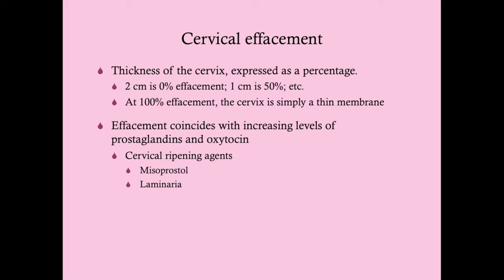Effacement coincides with increasing levels of prostaglandins and oxytocin. We can give prostaglandins to move effacement along — these are called cervical ripening agents. Examples include misoprostol (Cytotec) and dinoprostone. Another way to ripen the cervix is with laminaria, which comes from seaweed. It shortens the cervix and was historically used as an abortifacient in ancient times, but now we use it to help progress labor.